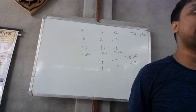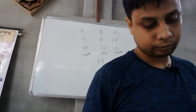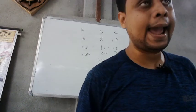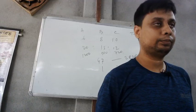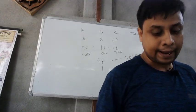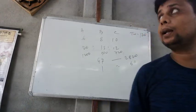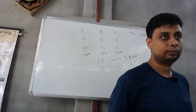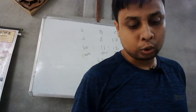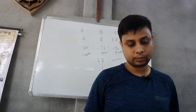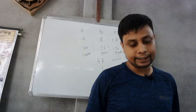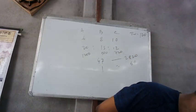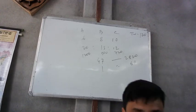A and B can do a piece of work in 12 days and 18 days respectively.